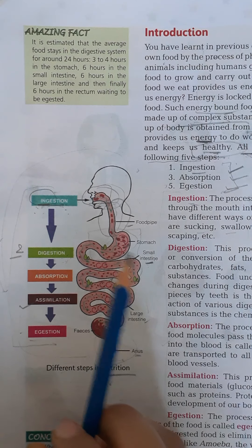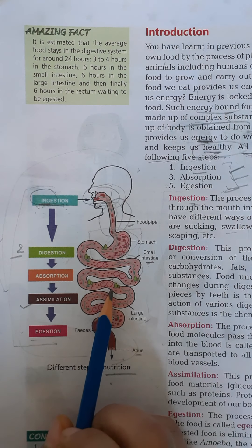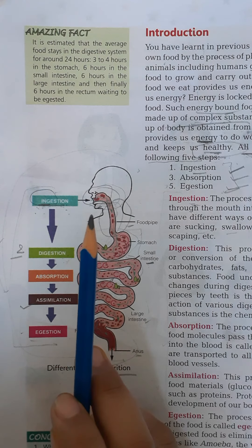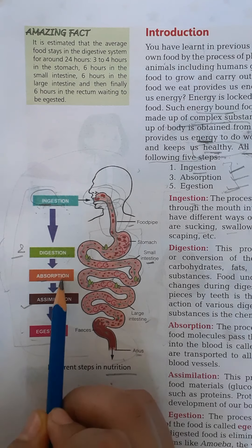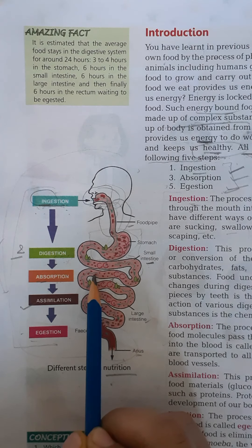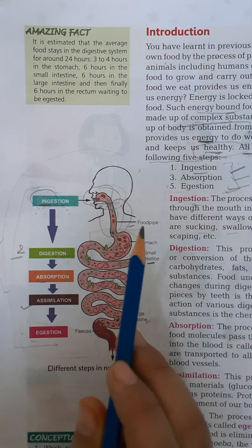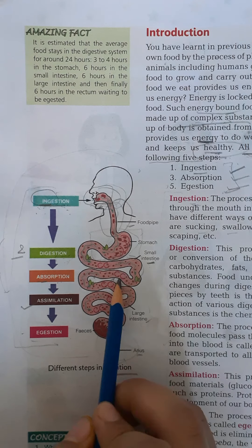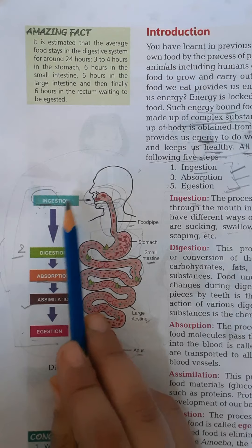Then from stomach to small intestine. Students, despite its name, small intestine is very long — it is about 9 meters. Then absorption. In absorption, the food goes into the small intestine, through which the nutrients from our food get absorbed into the blood. So this process is known as absorption.